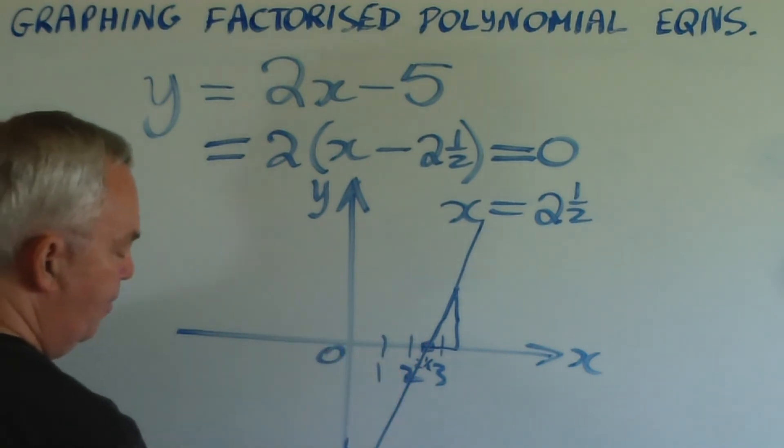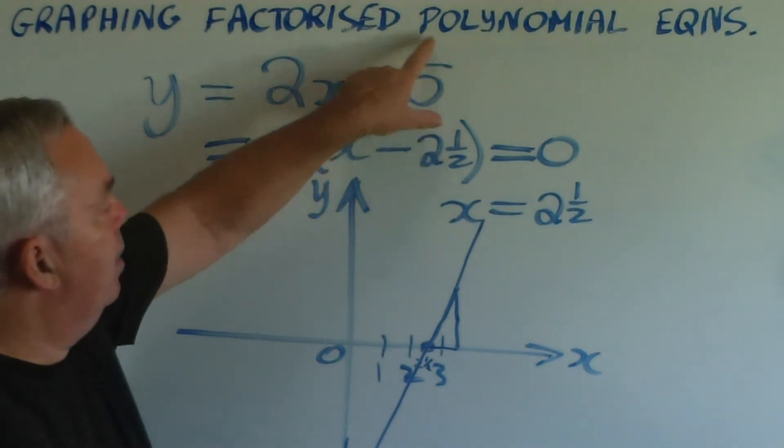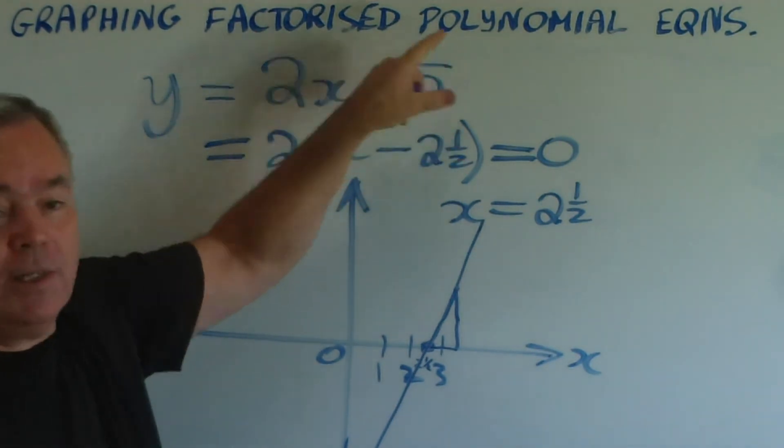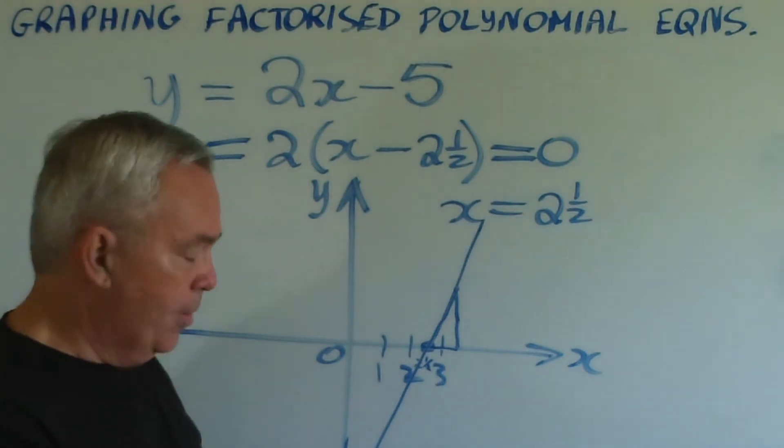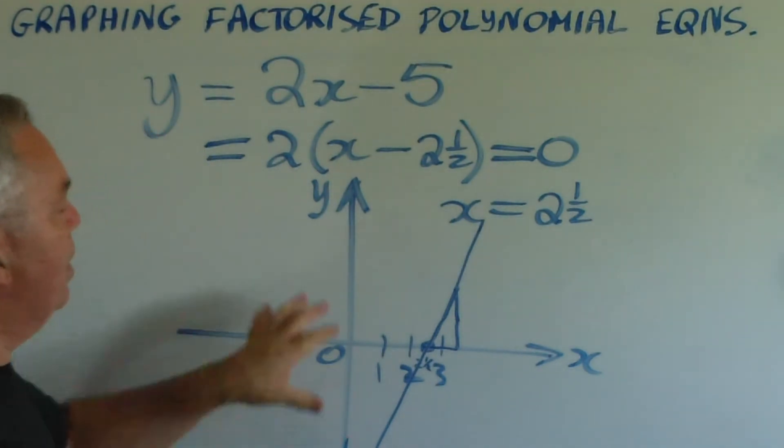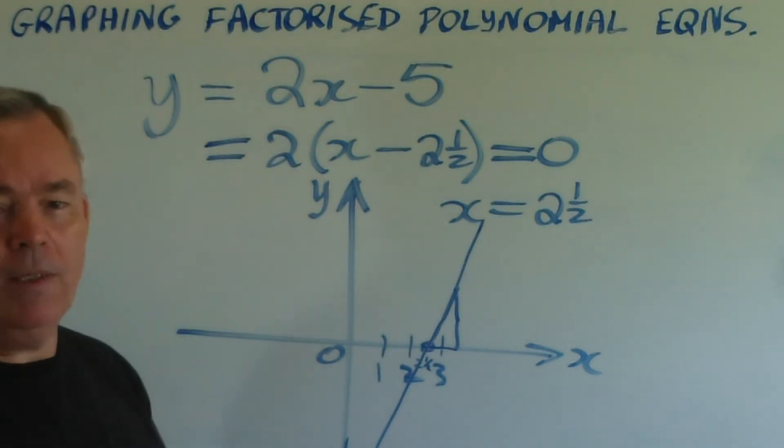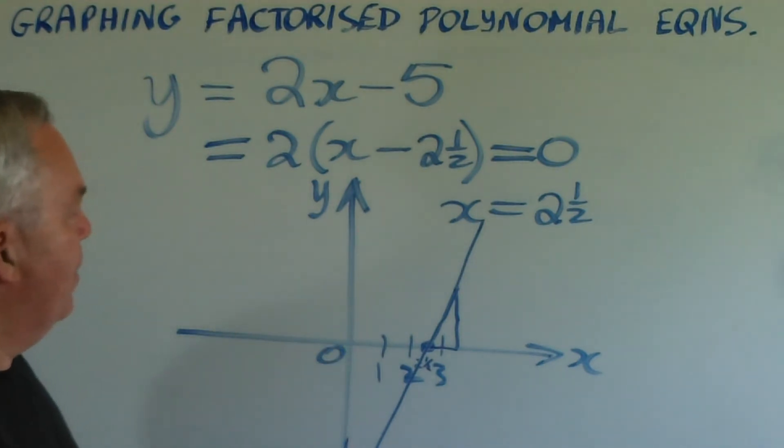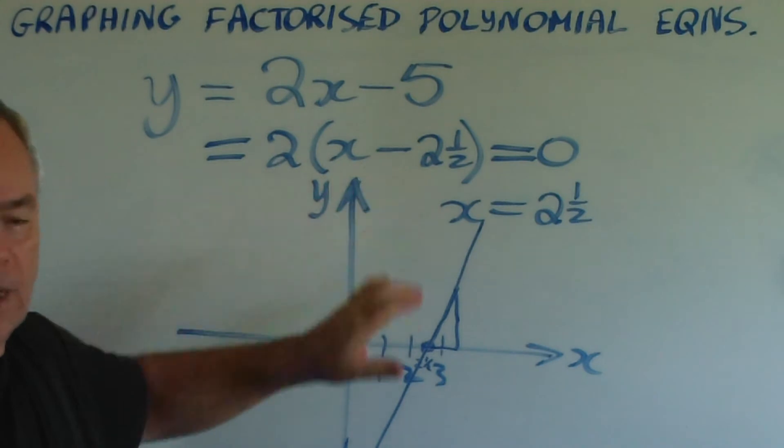So if that's two and a half, this is going to be at minus five. And of course, that's the y-intercept that we can read from the equation anyway. But this is just a slightly different way of looking at the equation for a straight line, to identify its root by factorizing.